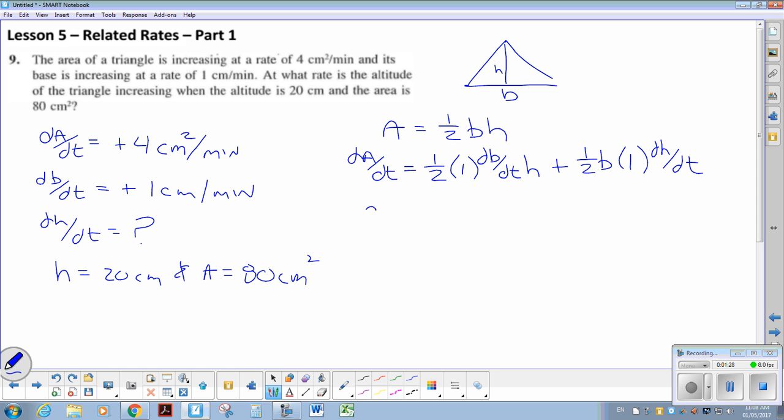So cleaning that up, we have dA by dt equals one-half dB by dt, plus one-half... I'm missing one... h over 2 and b over 2, dH by dt. I just lost my variables there.